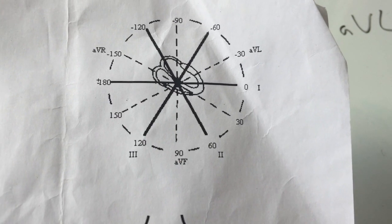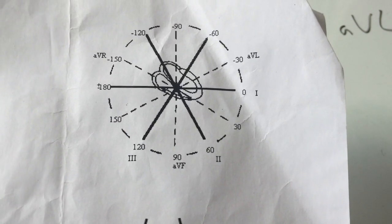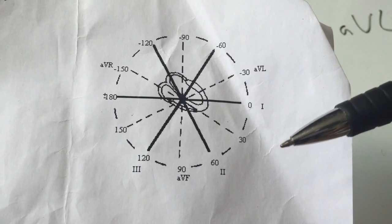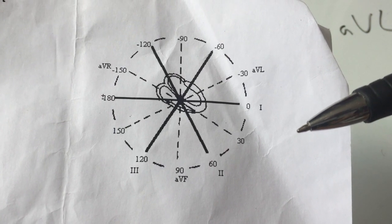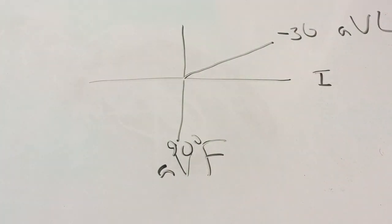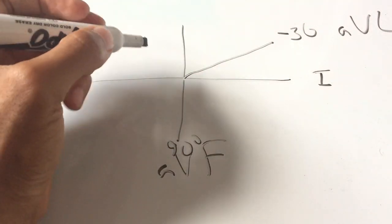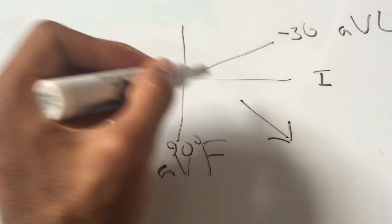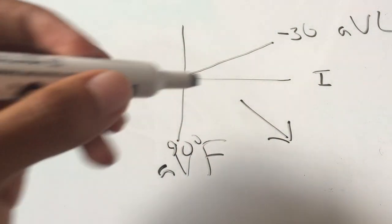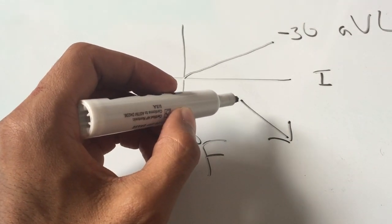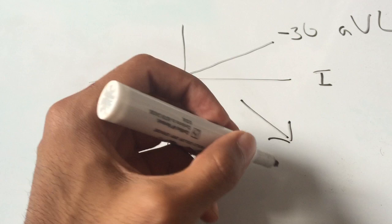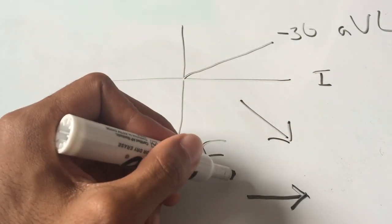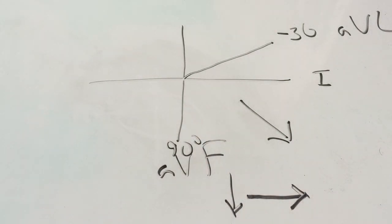So what you can do with that information is know that you should expect your net vector of depolarization from the ventricle to be in this direction. If you put a line like this, which is what you expect to be your net depolarization vector, you can see that you can break it down by two vectors that combine to make this net vector. That would be a horizontal one, your lead one, and a vertical one, which should be your lead AVF.